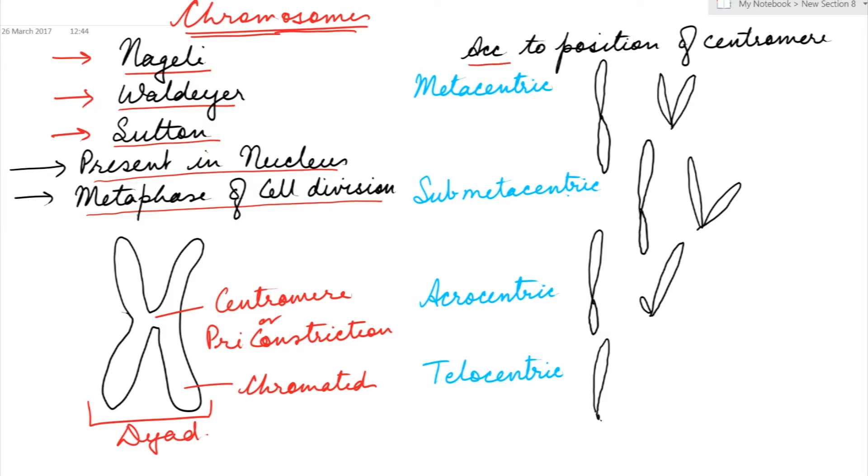According to the position of the centromere, chromosomes can be divided into different types. Metacentric means the centromere is at center, dividing the chromatid into two equal arms. During anaphase movement, V-shaped chromosomes can be seen. Submetacentric means the centromere is slightly away from center.